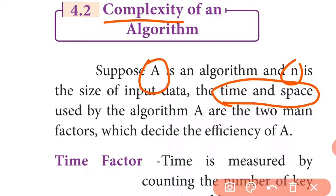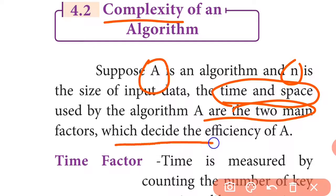Time and space used by the algorithm are the two main factors which determine the efficiency of the algorithm. These two factors are important to understand when analyzing an algorithm's performance.